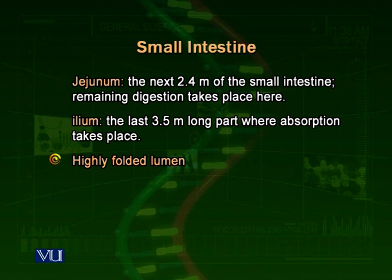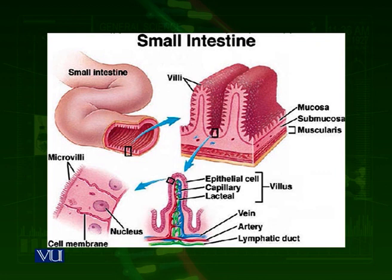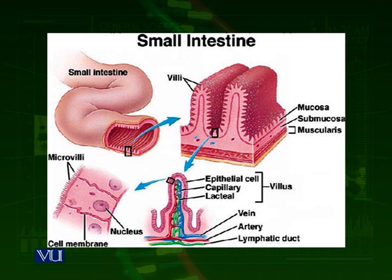The lumen of the ileum is highly folded. Looking at the diagram, we can see on the top left a part of the small intestine from the ileum. On the right, a small section is indicated by a black box and enlarged. In this enlarged part, we can see that the inner membrane of the ileum is highly folded, and these folds are further folded. There is a layer of muscles, then submucosa, then mucosa, and then the folds. The folds of the membrane have their own folds, which we call villi.